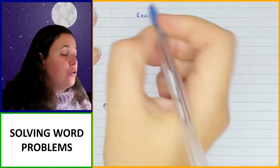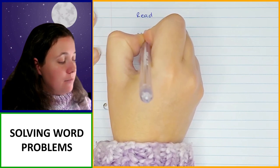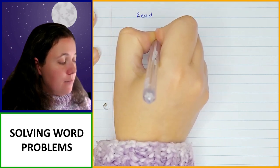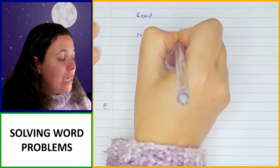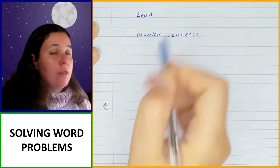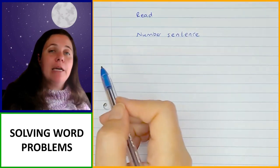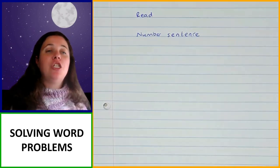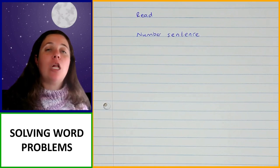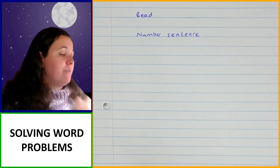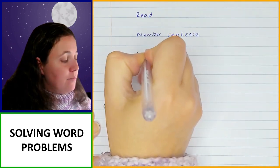The next thing you're going to do is write a number sentence. This is what's going to help you to actually solve that problem. You need to take the information and turn it into a mathematical statement, and then once you've got your number sentence, you need to go and solve it.